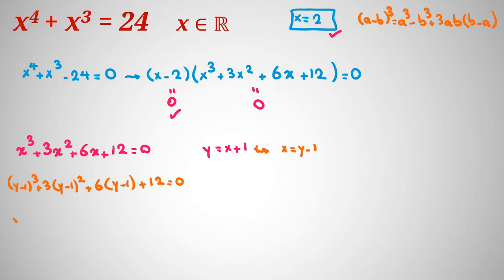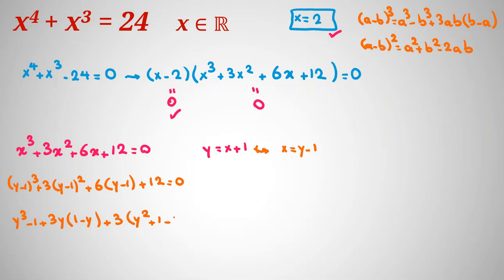Expanding the first part using the binomial formula gives y cubed minus 1 plus 3y times 1 minus y. For y minus 1 squared, using a minus b squared equals a squared plus b squared minus 2ab, we get plus 3 times y squared plus 1 minus 2y, plus 6y minus 6 plus 12 equal to 0.